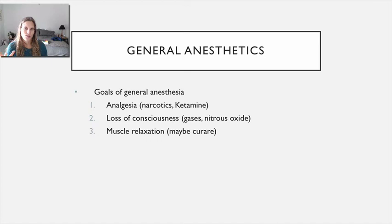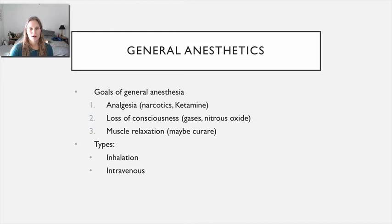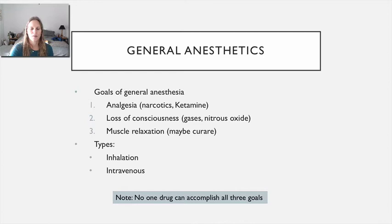So the first goal of general anesthesia is analgesia. The second goal is loss of consciousness, which is usually achieved by administering gaseous anesthetics or depressants — nitrous oxide is one example. The third goal is muscle relaxation; you don't want the patient moving around during a surgical procedure. Those are our three goals, and the routes of administration — inhalation or intravenous — are required because blood levels must be controlled tightly and the drugs must be effective quickly.